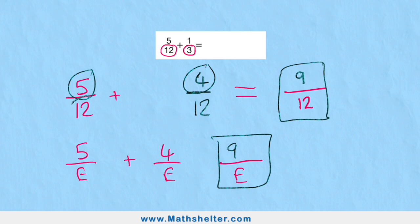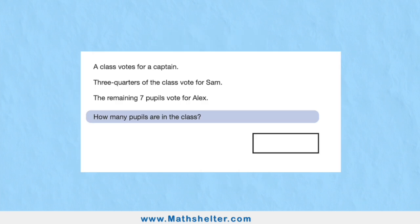Question four: we have a word problem. A class votes for a captain. Three-quarters of the class vote for Sam—let's highlight this important information. The remaining seven pupils vote for Alex. How many pupils are in the class? Well, we're going to need to draw a bar model.